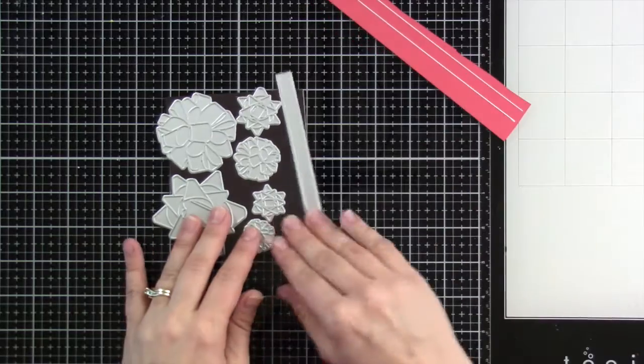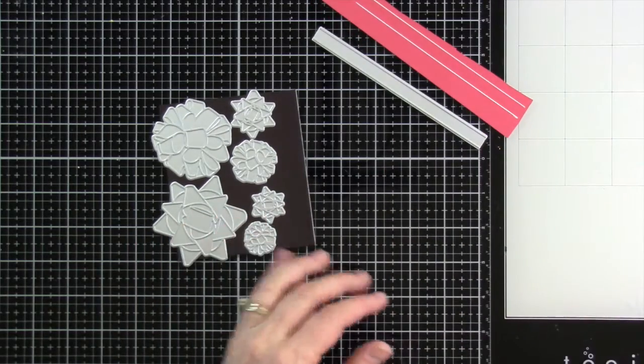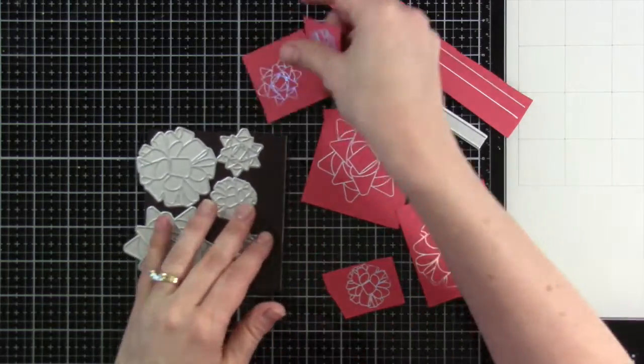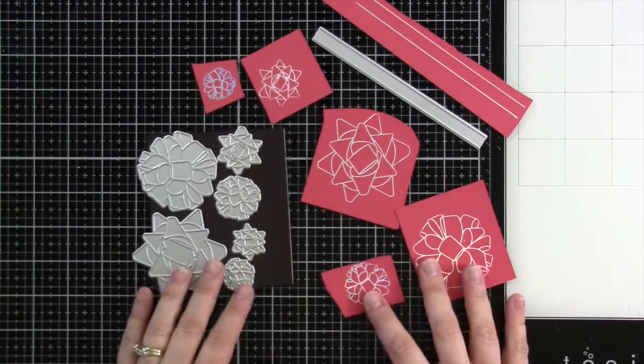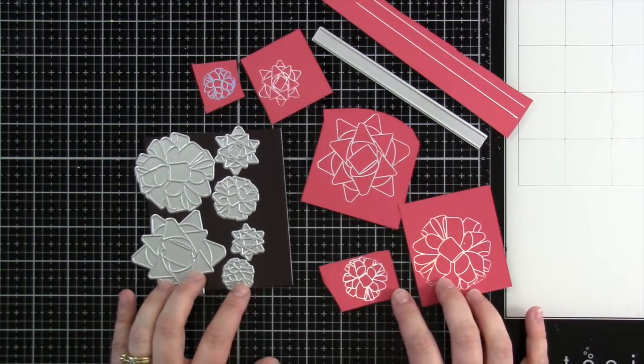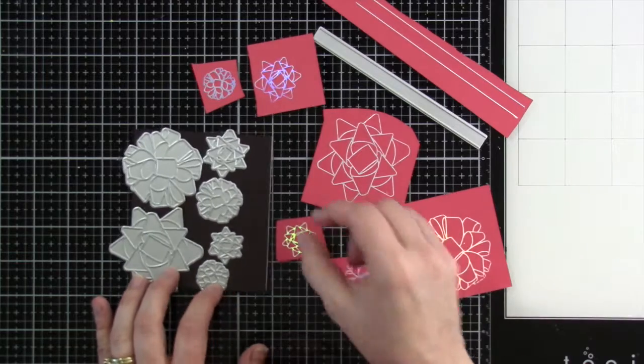Use them with your hot foil machine or use them with your die machine and adapter to create a fun letterpress effect. The large bow measures approximately two and a half inches and smaller bows measure approximately 1.25 inches.